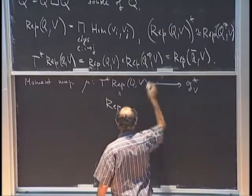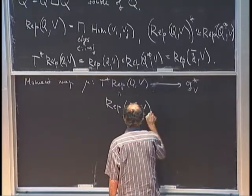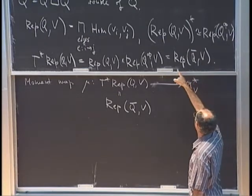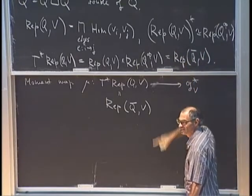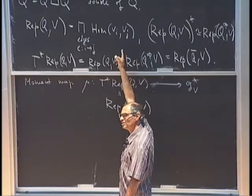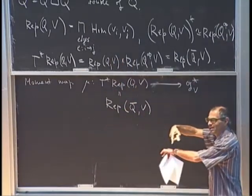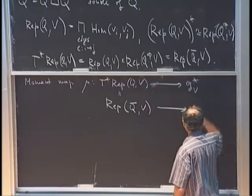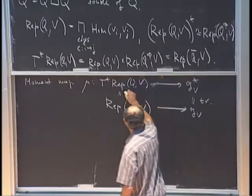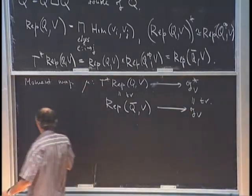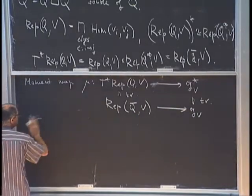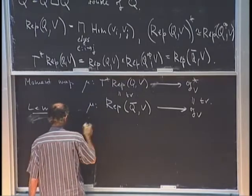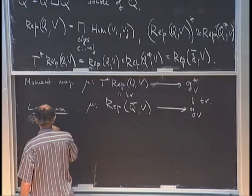We identify the dual using trace in both identifications. A lemma says that, at the level of Rep(Q-bar, V) mapped to the Lie algebra of G_V, the moment map has a specific form: given a collection of linear maps corresponding to arrows x in Q and reverse arrows x-star in Q-opposite, one cooks up a matrix.